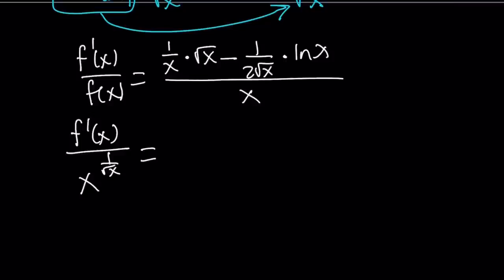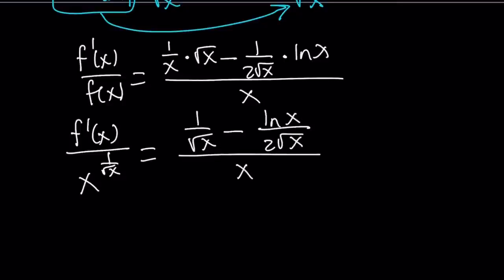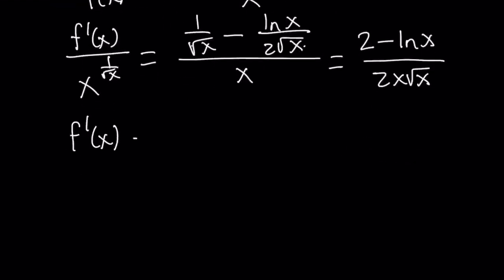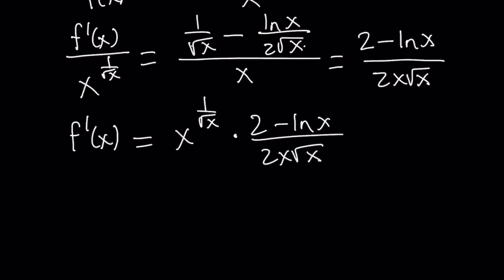Let's simplify: 1 over x times square root of x can be written as 1 over square root of x, and it's useful to make a common denominator next, which is 2 times square root of x. So we get 2 minus ln x in the numerator. The denominator becomes 2x times square root of x because you flip and multiply. But that whole expression equals f prime divided by f, so multiplying both sides by f — which is x to the power 1 over square root of x — gives us f prime by itself.